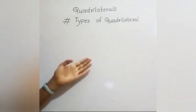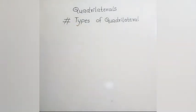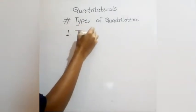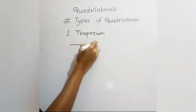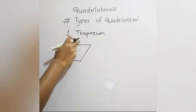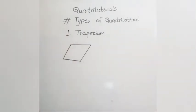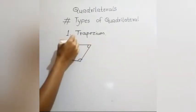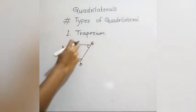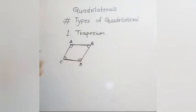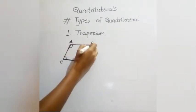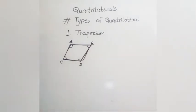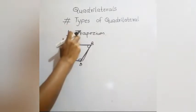In this video we are going to understand quadrilaterals and types of quadrilaterals. First, let's understand what a quadrilateral is. A quadrilateral has two pairs of opposite sides that are parallel and equal. For example, in quadrilateral ABCD, sides AB and CD are equal and parallel, and sides AC and BD are also parallel.